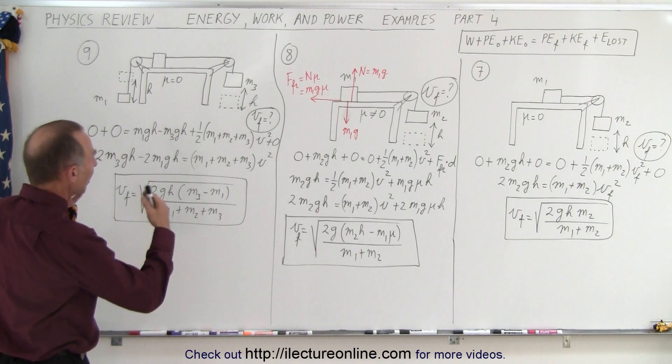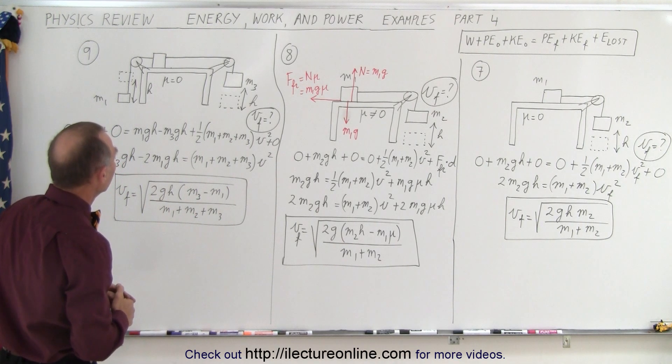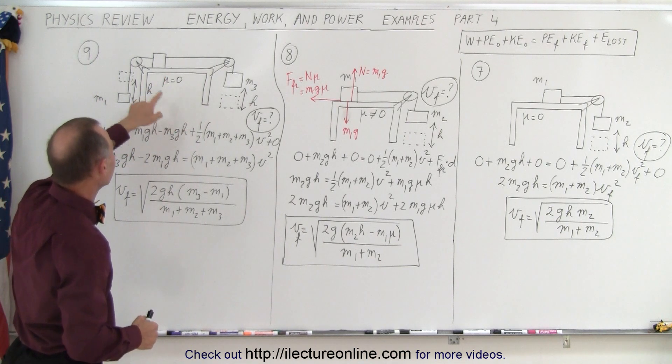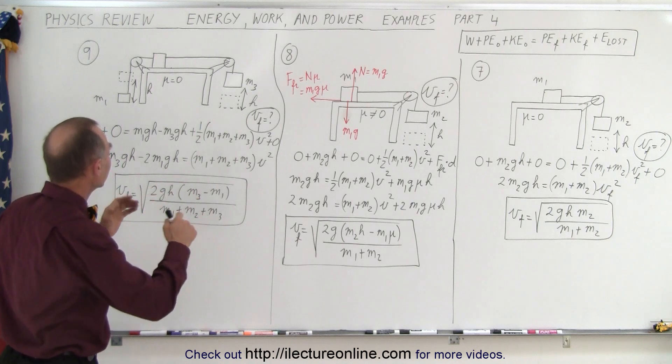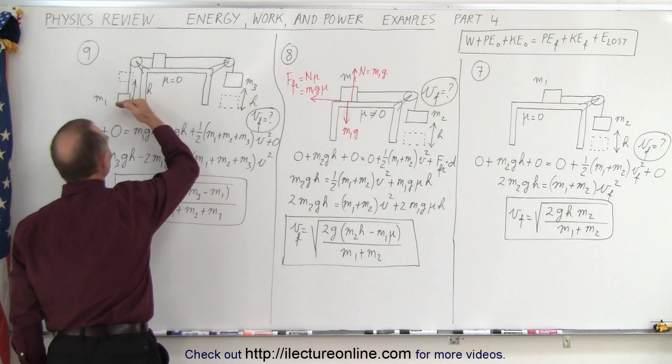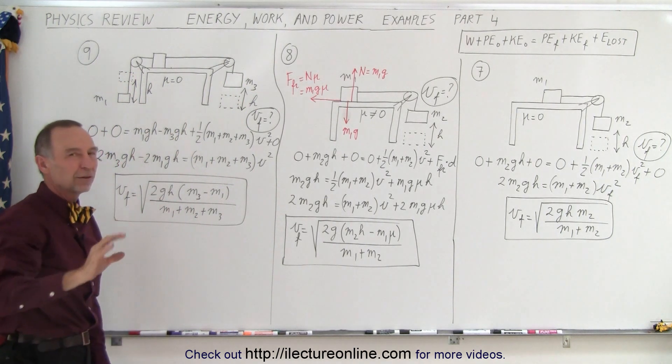On the third example here, now this is example 9 because we show you in groups of three. Now we have three objects—one on the left side, one on the right side, one on the tabletop—two pulleys, they're all connected together. Of course when this block drops by distance h, this block goes up by distance h. Mu is zero just to keep it a little more simple.